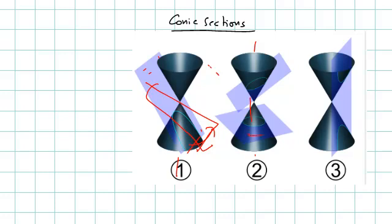We already discussed the circle case. Now, hyperbola. Hyperbola is if you cut the cone with a plane that is parallel to the axis of the cone. You cut this circular cross-section like this — this plane goes like this, parallel to the axis. So the figure we see is a hyperbola. And if you combine two cones like this, we see both the sections of the hyperbola.